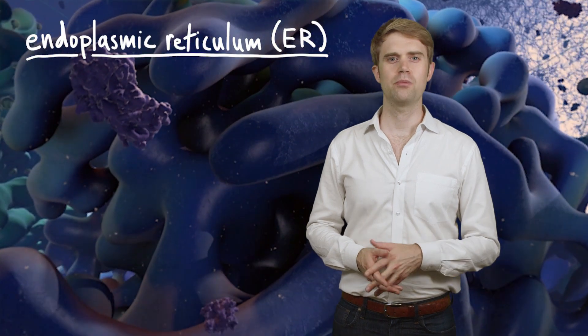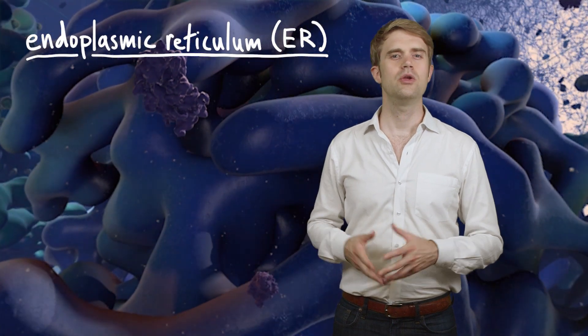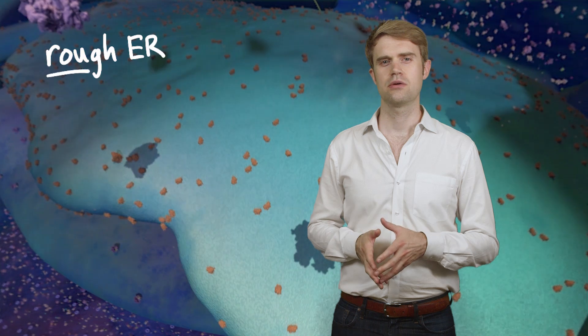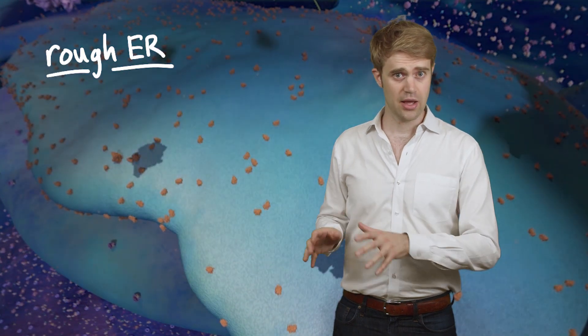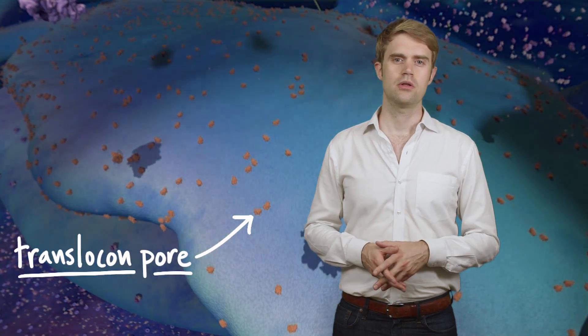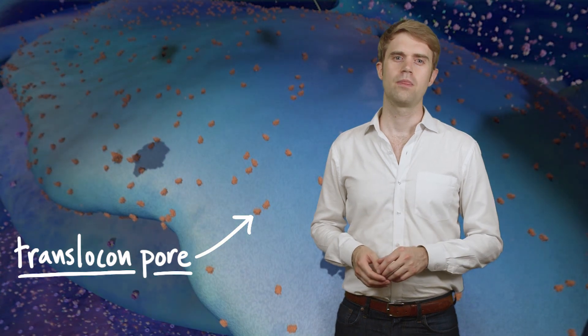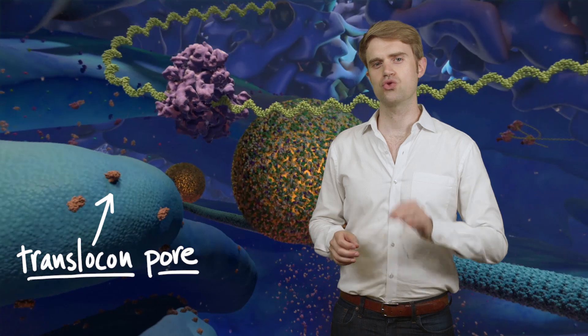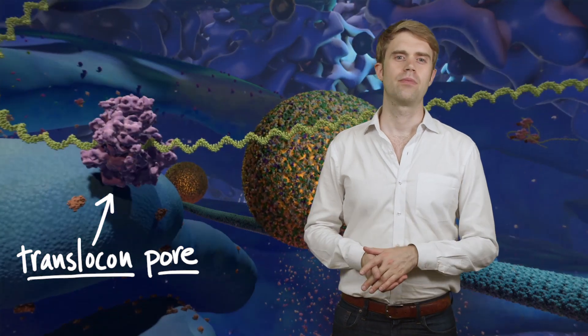Here's a better view of the endoplasmic reticulum. When you explore the cell, you'll see that there are actually two types. One type has little orange dots. This is known as rough ER, and another type doesn't. It's called smooth ER. The orange dots are called translocon pores. They're little holes in the ER. Ribosomes attach to these holes and push newly made proteins right into the ER.